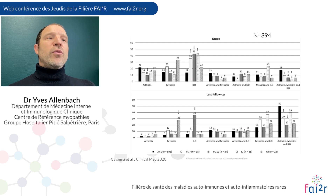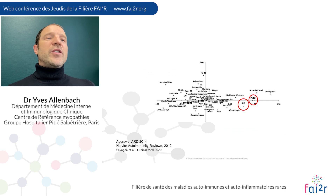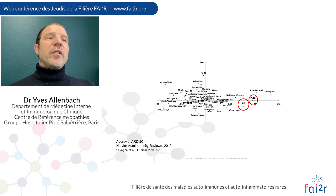You must not wait to have all three features — myositis, arthritis, and ILD — to diagnose antisynthetase syndrome. You should also be aware that antisynthetase syndrome shows variation depending on the specific antibody. PL7 and PL12 positive patients have more severe lung disease and milder muscle disease, as discussed previously.